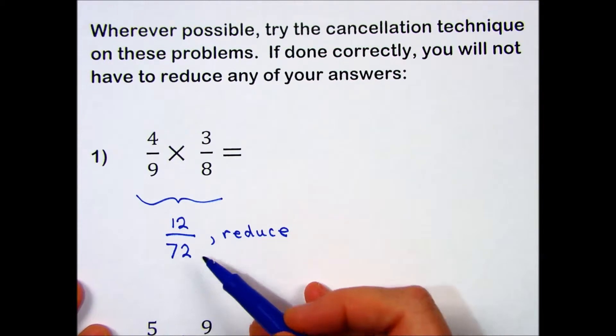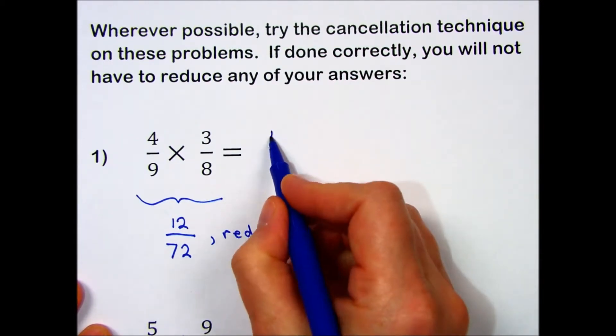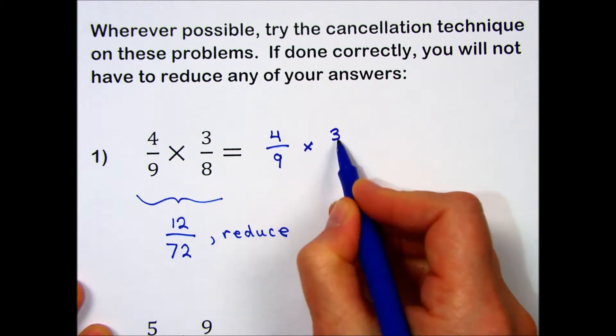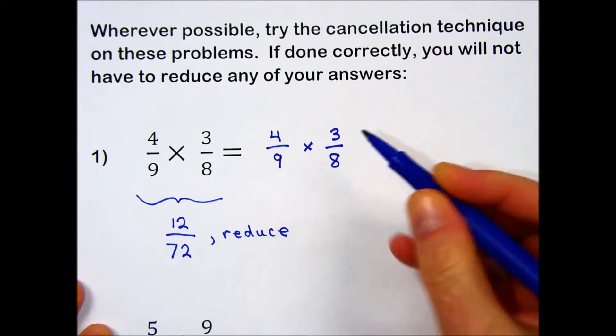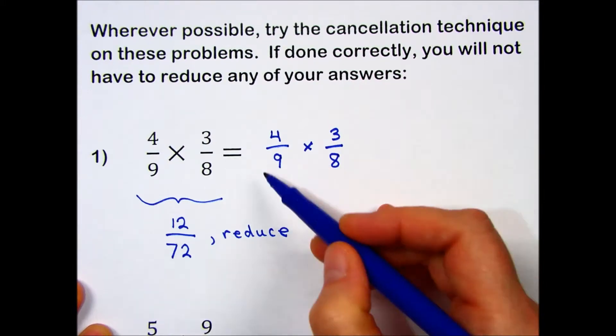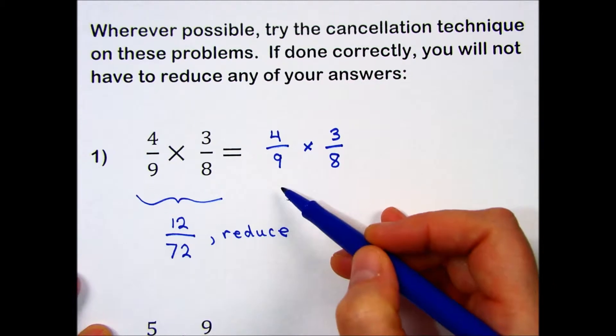Let's try the cancellation technique. I'm going to rewrite my fractions. And usually on the diagonals, we look for factors that may be divided out of each of the numbers.